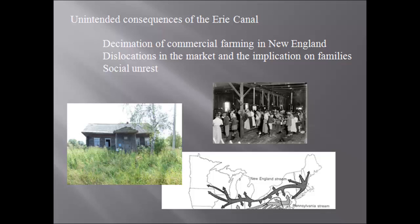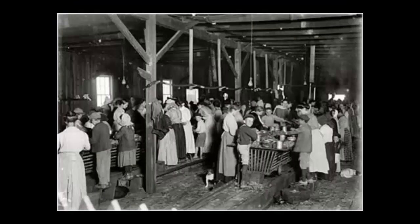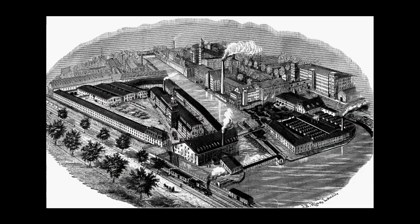Some of them are going to get jobs doing the construction of other canals as they form. But ultimately they'll go into the mills — in Waltham, Massachusetts, and at Lowell, Massachusetts — as innovating capitalists from New England begin to create factories that look like what they had in England. So that's that interesting chain of consequences.